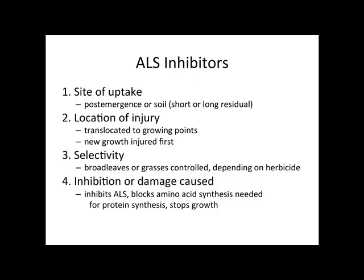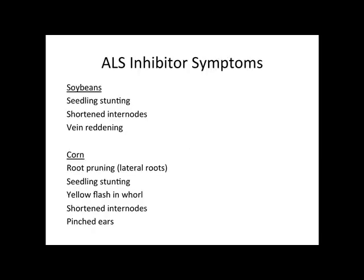How do ALS inhibitors actually work? They can be post-emergence or soil applied, with short or long residual depending on the product — lots of variation within the site of action. They are translocated to the growing points, so new growth is injured first. Broadleaves or grasses are controlled depending on the herbicide. They inhibit ALS, which blocks amino acid synthesis needed for protein synthesis, which stops growth.